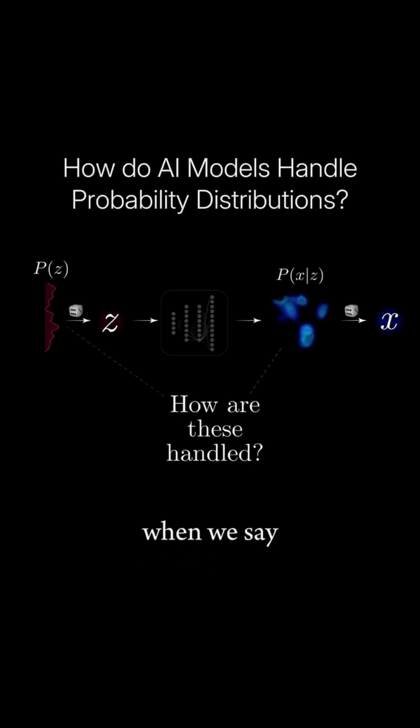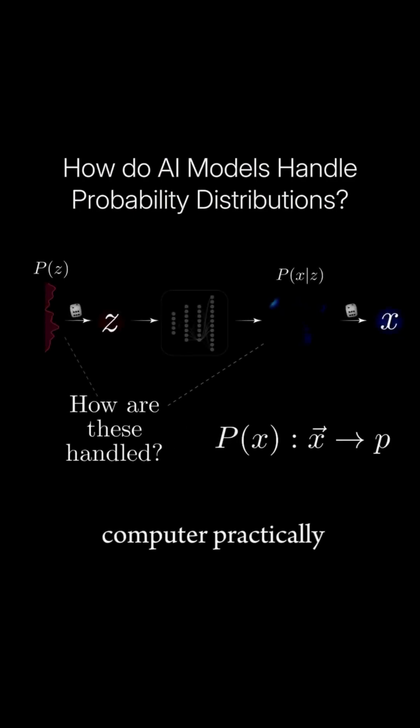What do we actually mean when we say things like a model gives us a distribution? How does a computer practically represent these infinite mathematical objects?